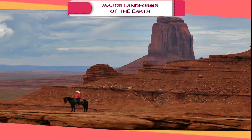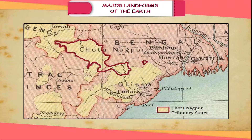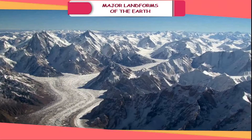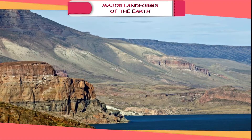A continental plateau rises abruptly from the adjoining areas — for example, the Chota Nagpur Plateau. Inter-montane plateaus are formed in between mountain ranges — for example, the Tibetan Plateau. Piedmont plateaus develop at the foot of the mountains — for example, the Patagonia Plateau of Argentina.